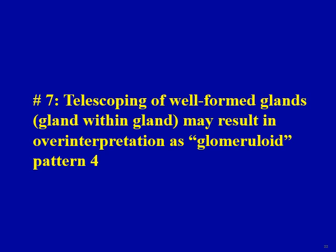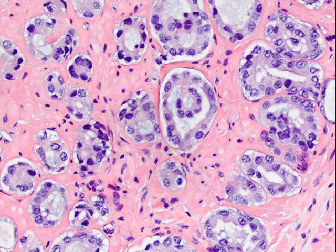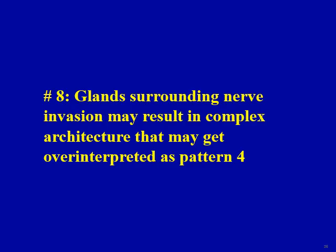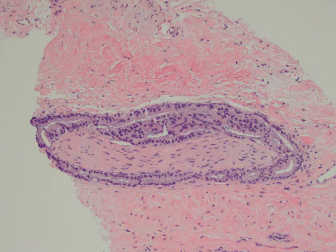Pitfall seven: sometimes you may see telescoping of well-formed glands, also referred to as gland-within-gland, which may result in over-interpretation as a glomeruloid pattern. Pitfall eight: glands surrounding nerve invasion may result in complex architecture that gets over-interpreted as pattern 4. The rule of thumb is that if your overall case is pattern 3, a small amount of complex architecture around nerve invasion should not result in interpretation as pattern 4 — it is still considered pattern 3 with perineural invasion.